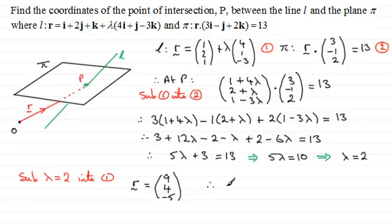So therefore, what we've got is the point P has coordinates (9, 4, -5). So I hope it's given you an idea on how we can go about finding this point of intersection. Thank you.